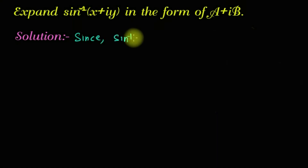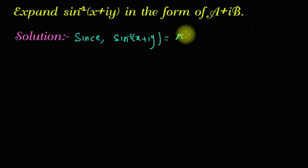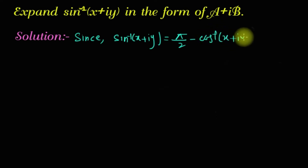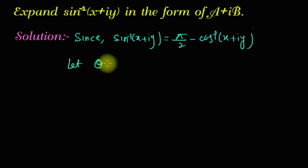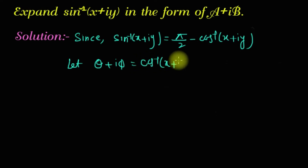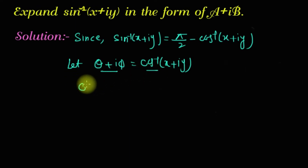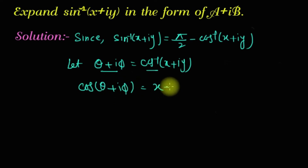Since sin⁻¹(x+iy) = π/2 − cos⁻¹(x+iy). Let θ+iφ = cos⁻¹(x+iy)। cos को हम यहाँ लाएंगे तो यह हो जाएगा: cos(θ+iφ) = x+iy। अब इस x+iy को हम पहले इधर लिख लेते हैं।